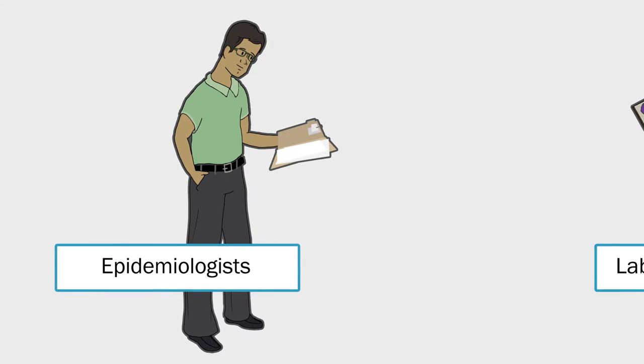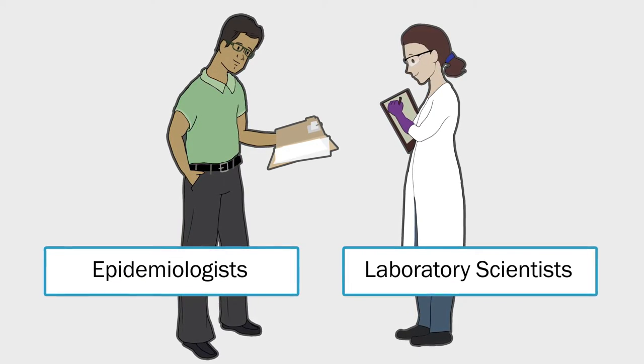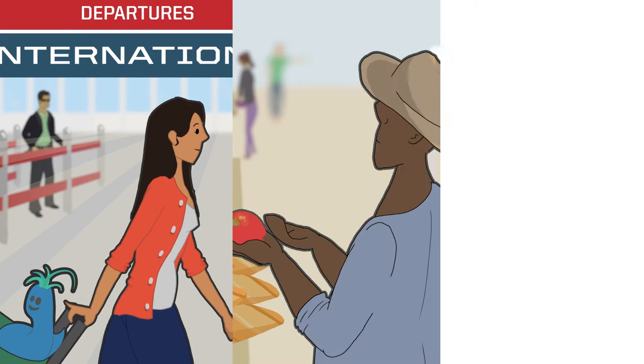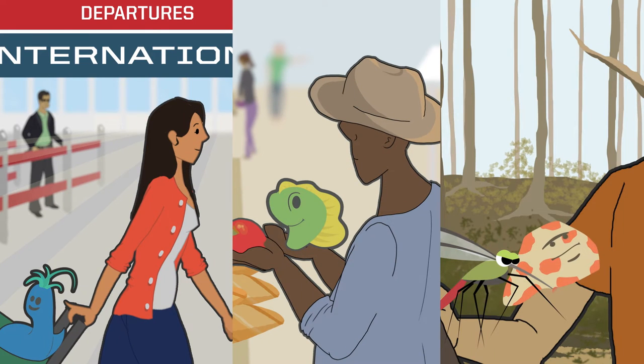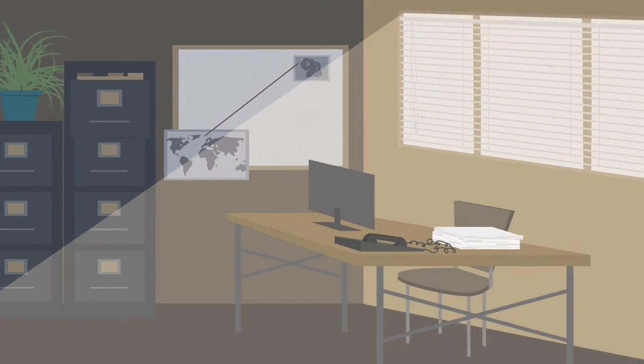There are highly trained teams of experts that stay constantly alert to search for, track, and prevent these diseases. When an emerging infectious disease is identified, the public health system is alerted, and the investigation begins.